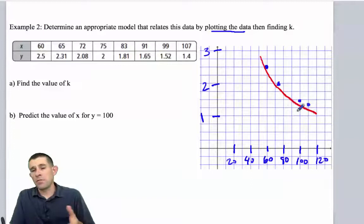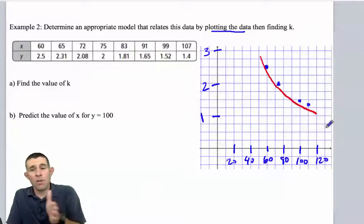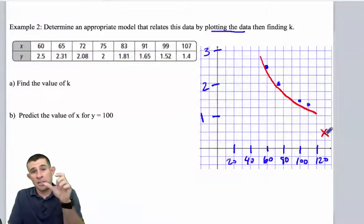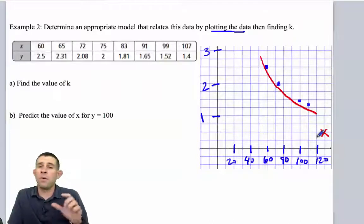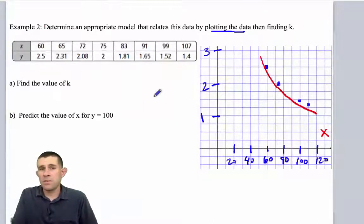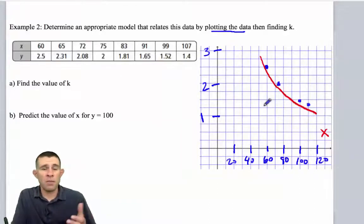In other words, as it grows on the x-axis, it looks like it's getting closer to that x-axis, but possibly not touching it. So this is going to suggest to me an inverse variation, because this is in the shape of a hyperbola.